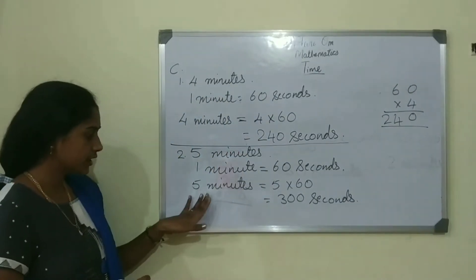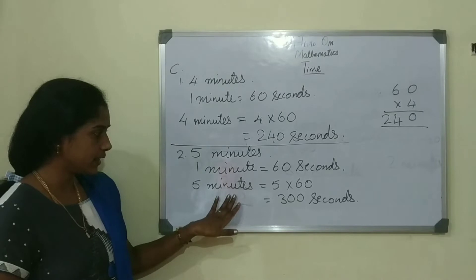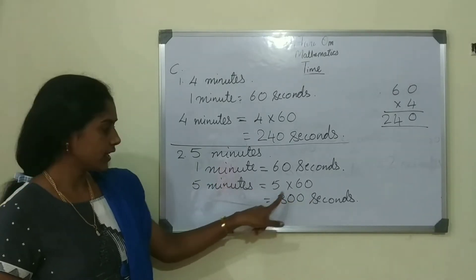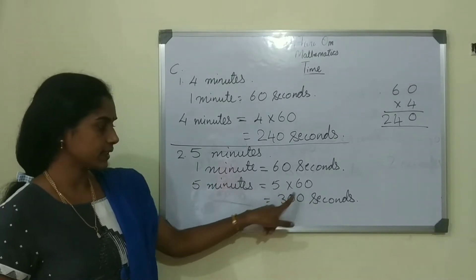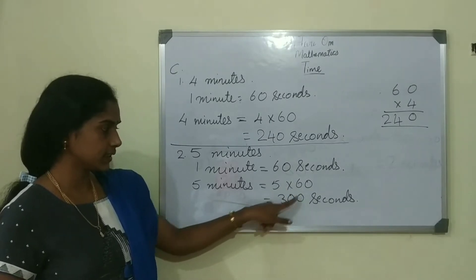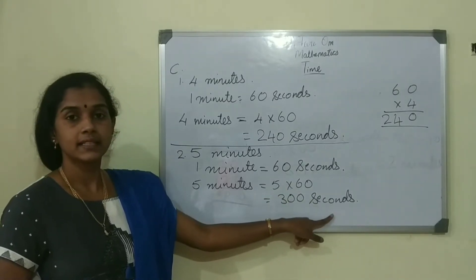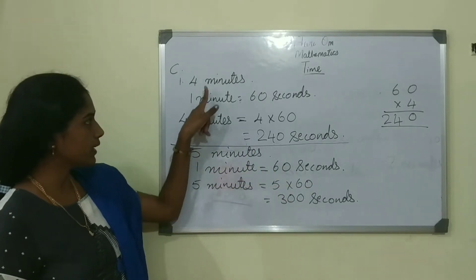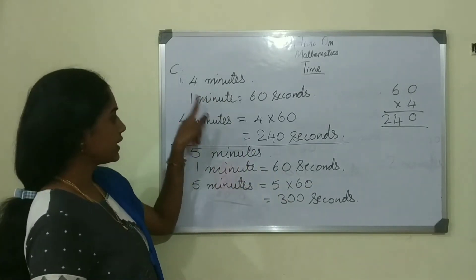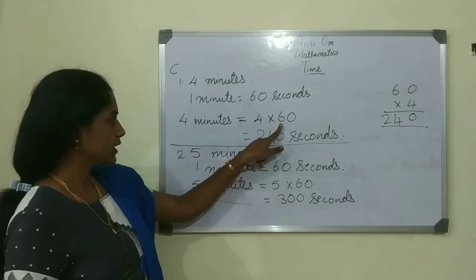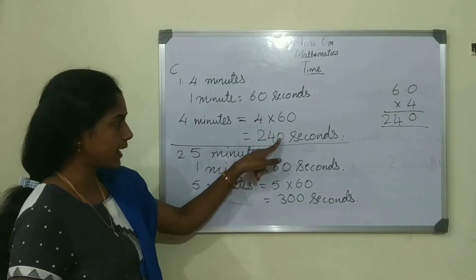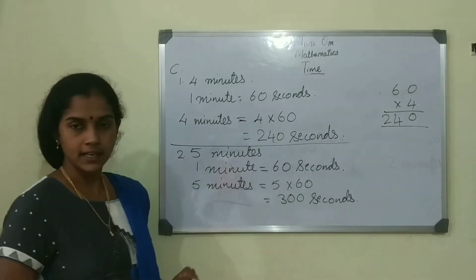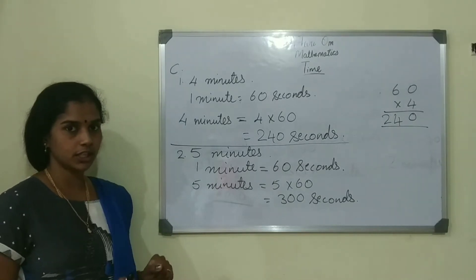5 minutes, to convert it into seconds: 5 into 60. 6 fives are 30, write this 0, it is 300 seconds. And for 4 minutes: 4 into 60, 6 fours are 24, add this 0, so it is 240 seconds.